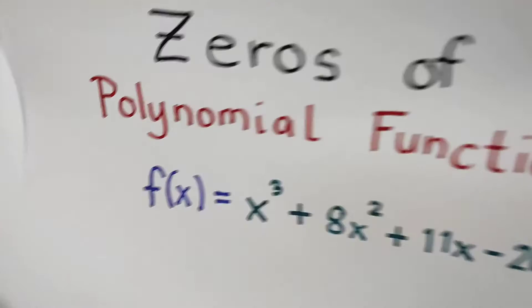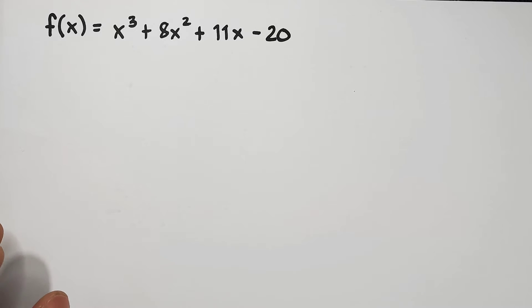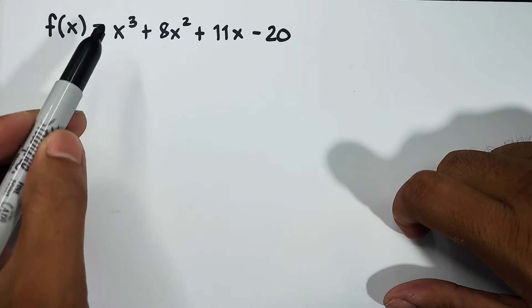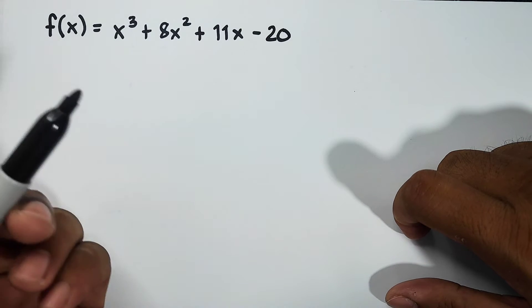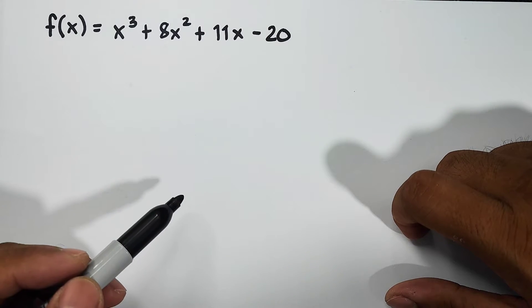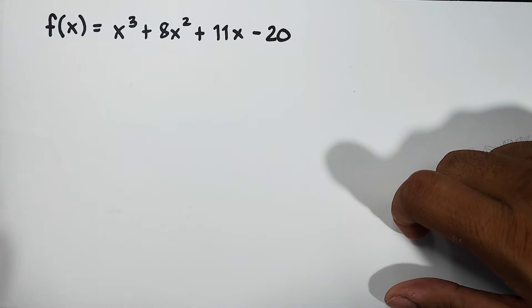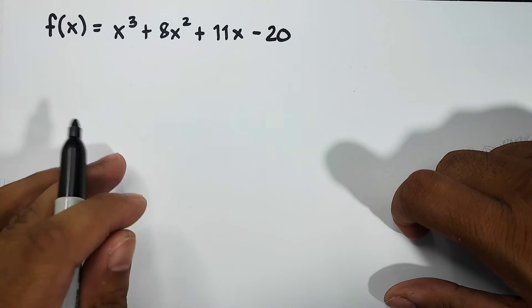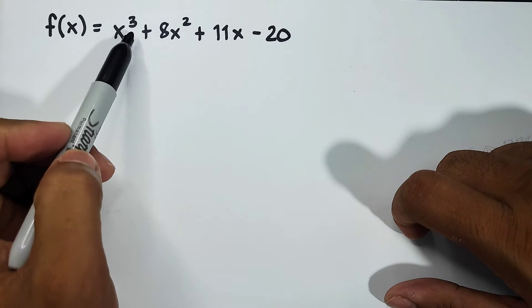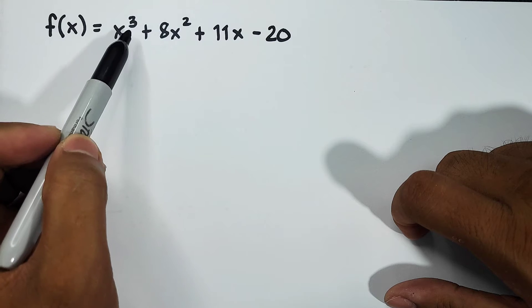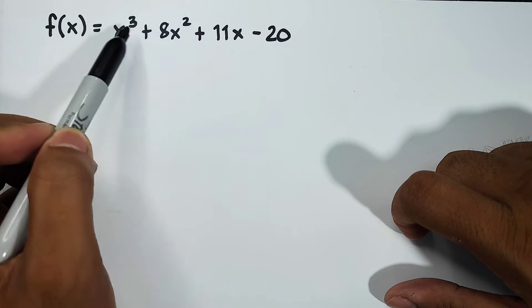Let's have the first example. In our first example, we will try to use the rational zero theorem to help us in identifying the roots or the zeros of this given function. The degree of the polynomial function will determine or will give you the hint on how many solutions or roots we have. For example, here we have x³. As you can see, the degree is three, meaning we have three roots or zeros.